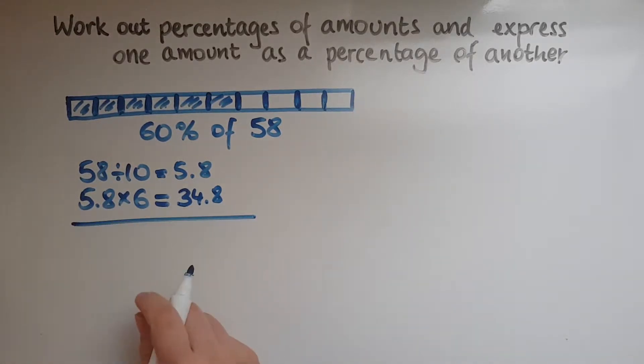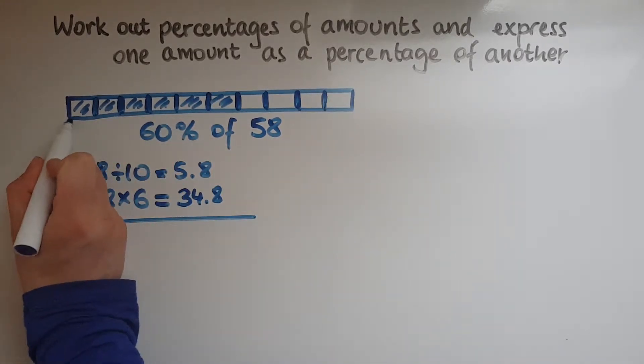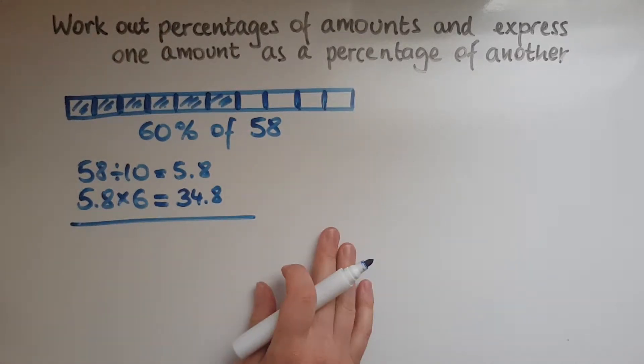Another way of working it out would be to divide 58 by 100, so we get a tiny amount, 1%, and then multiply it by 60.